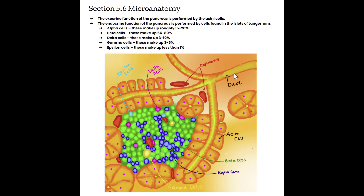Most of the cells in the pancreas are the acinar cells. Looking at our close-up image of the pancreas, we have a duct coming through here and we can see that it terminates in a cluster of cells — all of the cells connected to the ductal system are called the acinar cells. They make up a really big portion of the pancreatic cells.